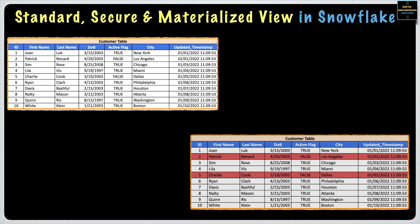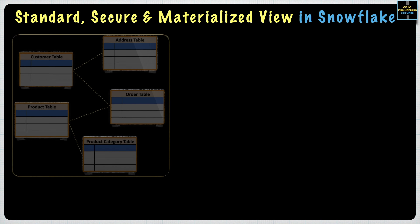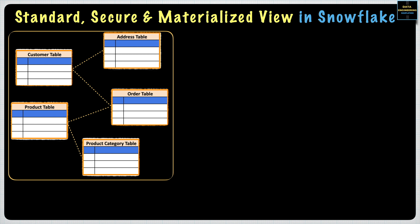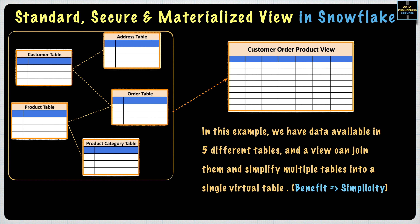Views can represent a subset of data contained in a table. In this example, the requirement says never show inactive customers. A view can be made accessible to the user while the underlying tables are not directly accessible — a clear benefit of security. Views can also act as aggregated tables where the database engine aggregates data like sum and average and presents the calculated result as part of the data. In this example, data from five different tables can be joined, aggregated, and simplified into a single virtual table — a clear benefit of simplicity.